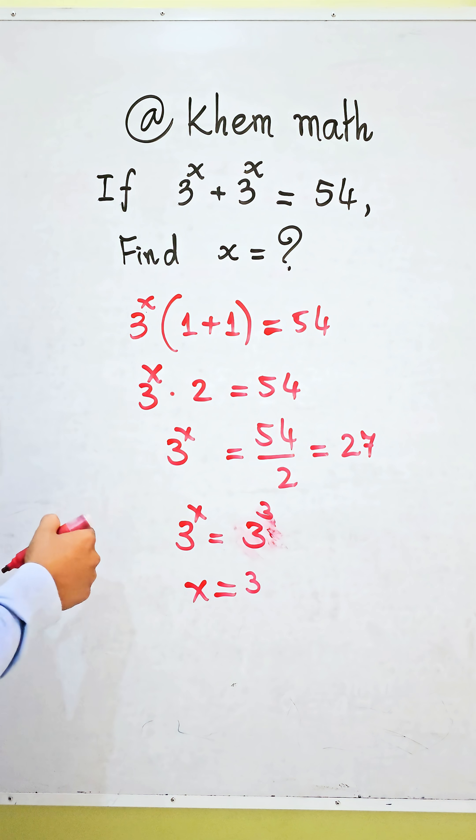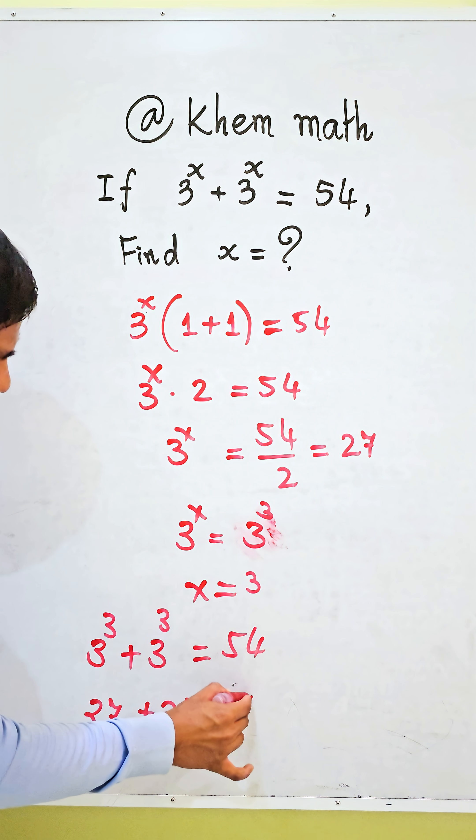Now we check our solution. We get 3 power of 3 plus 3 power of 3 equals 54. 3 power of 3 equals 27, plus 27 equals 54.